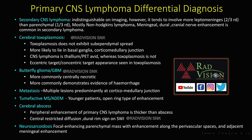Common differentials that mimic primary CNS lymphoma: secondary CNS lymphoma is indistinguishable on imaging but involves leptomeninges more than parenchyma and is mostly non-Hodgkin lymphoma, with meningeal, dural, or cranial nerve enhancement being common. Toxoplasmosis can mimic lymphoma but does not show subependymal spread, is typically seen in basal ganglia or corticomedullary junction, and may show eccentric or concentric target appearance. CNS lymphoma is thallium-PET avid whereas toxoplasmosis is not. Butterfly gliomas show central necrotic areas and hemorrhage growing in butterfly fashion. Metastasis shows multiple lesions predominantly at the corticomedullary junction.